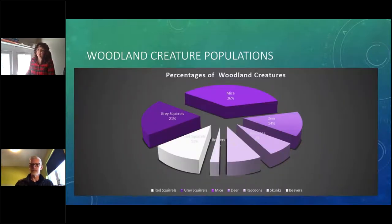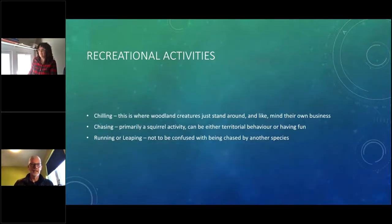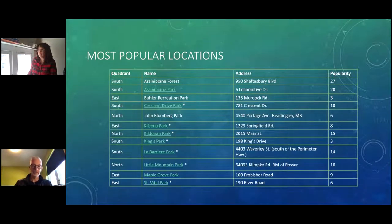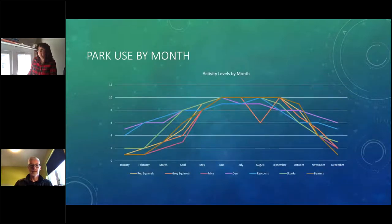This is what we found in the breakout: we have mice, squirrels, beavers, raccoons, skunks, and deer. We measured how they relaxed, what they did, whether they were chasing, running and leaping. This is some of the things we found when surveying several parks in the city, and here's our graph representing their activity levels by month.